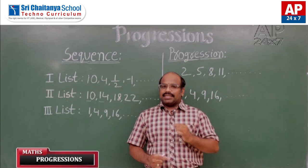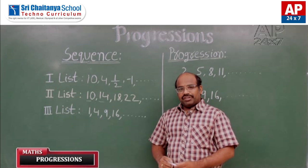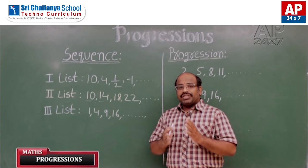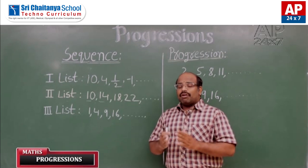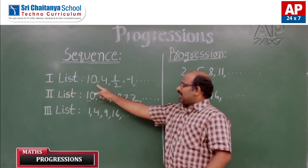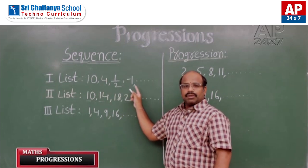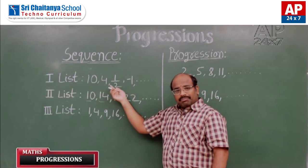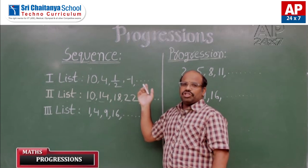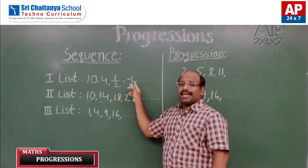Let us discuss a few examples. There are several lists of numbers, and I want to judge which list represents a sequence and which does not. Looking at list 1, based on the given 4 numbers, are you able to predict the next number? You cannot, because these given numbers are not following any certain pattern.